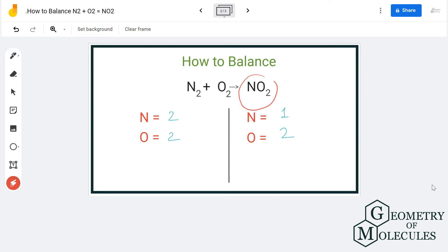So we now have two nitrogen atoms on this side as well, but when we move to oxygen atoms we only have two oxygen atoms on the reactant side but four oxygen atoms on the product side. So to balance it out we will add two here for oxygen gas.